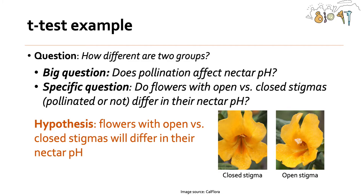For example, you might ask: does pollination affect nectar pH? We can ask a specific question: do flowers with open or closed stigmas — a closed stigma representing a pollinated flower and an open stigma representing an unpollinated flower — differ in their nectar pH?